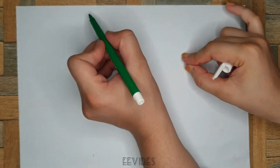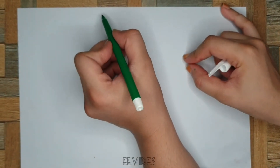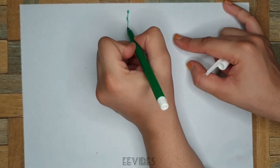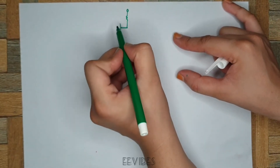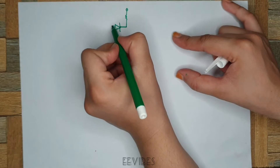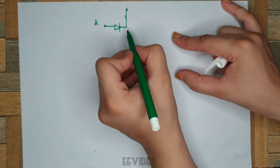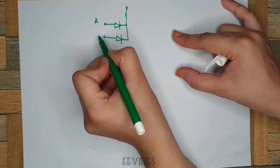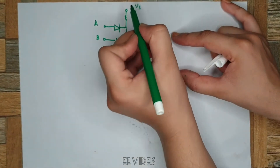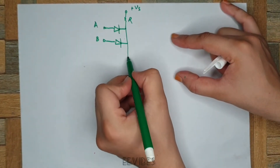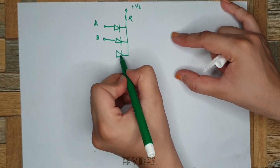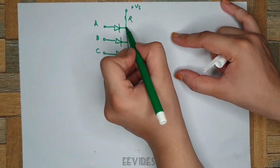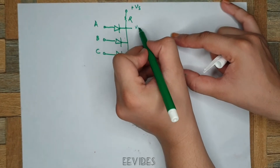In the first part, we explained diode switching circuits where anode terminals were connected together in parallel. Now let's consider a scenario where we tie all the cathode terminals together and apply individual inputs at the anode terminals. Here we are again connected with Vs, and let's consider three diodes connected in parallel. The output will be taken at the common point measured with respect to ground.